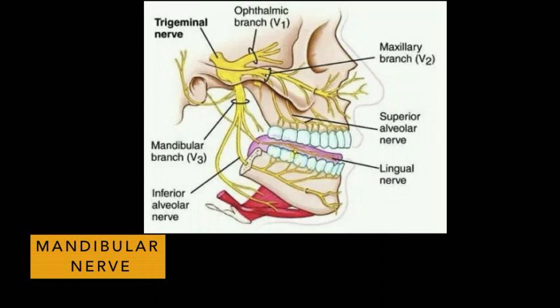The mandibular nerve is the largest of the three divisions of the trigeminal nerve, which is the fifth cranial nerve. The mandibular nerve is a mixed nerve — that is, it contains both sensory and motor components.